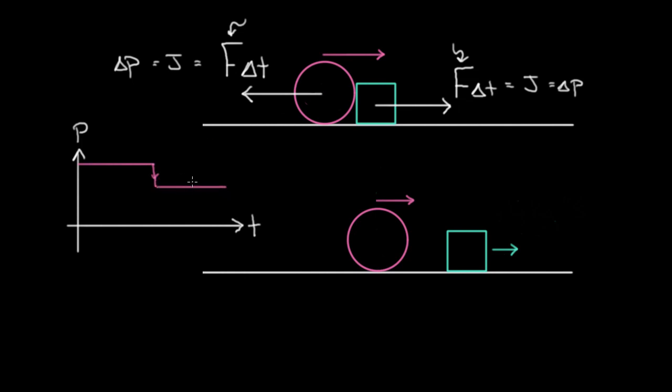And then afterward, it'll maintain a constant amount of momentum. The green cube here started with zero momentum. It was at rest. During this collision, it gained some momentum, so it's going to jump up maybe to here. And afterward, it stays constant.